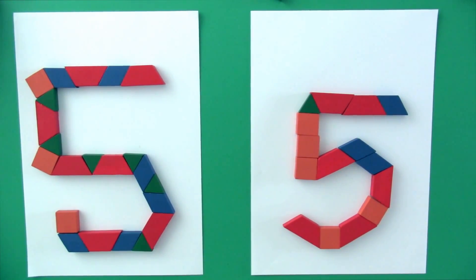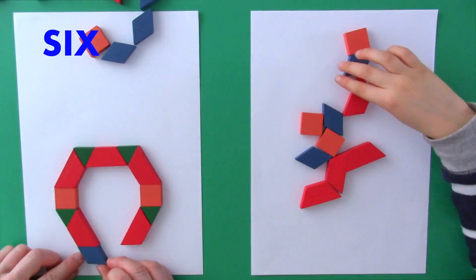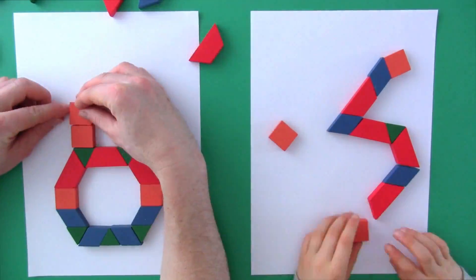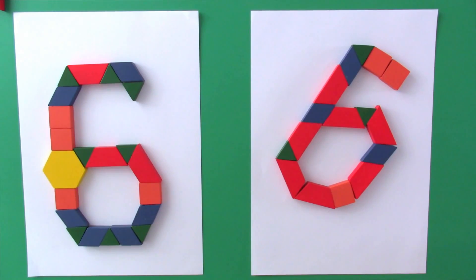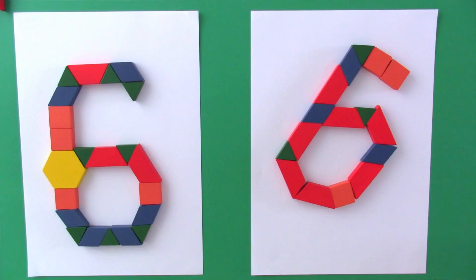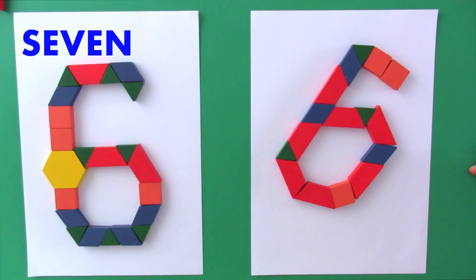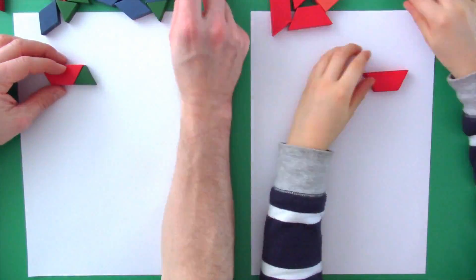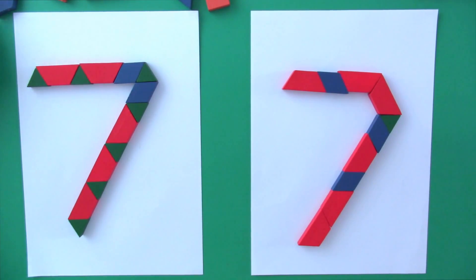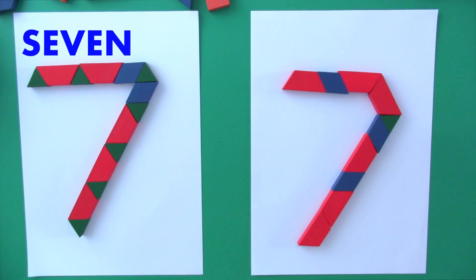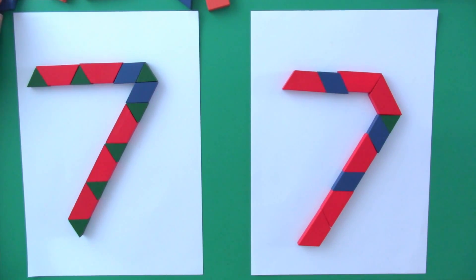What number comes next? Six. What number is that called in English, Elliot? Six. And how do we say six in French? Six. What number comes next? Seven. What number is that called in English, Elliot? Seven. And how do we say seven in French? Six.